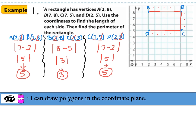Now let's find the distance from point D to point A. There are three boxes between them. The x-coordinates are the same, so we find the absolute value difference of the y-coordinates: |8 − 5| = 3. The distance from D to A is 3.